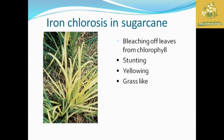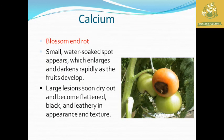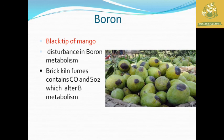Iron chlorosis in sugarcane shows symptoms of stunting, yellowing, and grass-like appearance where you cannot get the economic stem. Calcium deficiency in tomato causes blossom end rot, where small water-soaked spots appear and enlarge as the fruit develops, causing decay of the fruit.